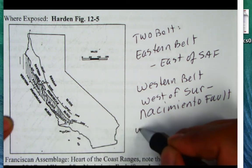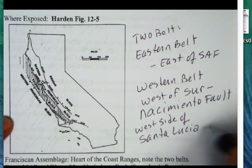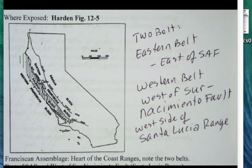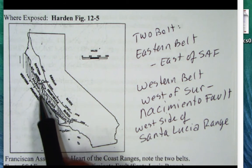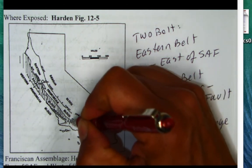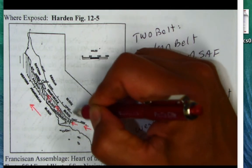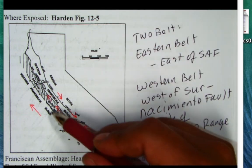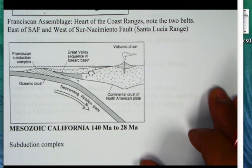The Sur-Nacimiento Fault occurs on the west side of the Santa Lucia Range, which is a major mountain belt in the Big Sur region — the spine of Big Sur with its high peaks. So those are the two belts of the Franciscan, one on the east and one on the west, with the Salinian Block sandwiched in between — a block that probably started in Southern California and was moved northward by movement on the San Andreas Fault.